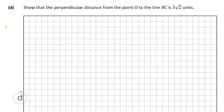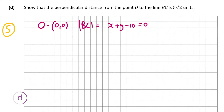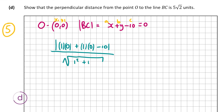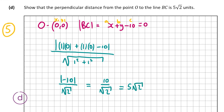Part D is worth 5 marks: show that the perpendicular distance from O to line BC is 5√2 units. The formula on page 19 is: |a·x1 + b·y1 + c| divided by √(a² + b²). From the equation x + y minus 10 = 0: a = 1, b = 1, c = minus 10, and (x1, y1) = (0, 0). So it's |1·0 + 1·0 minus 10| over √(1² + 1²) = 10 over √2 = 5√2 units, as required.